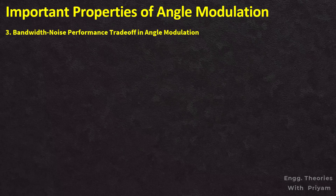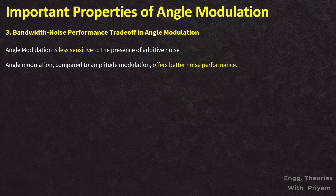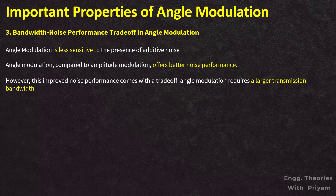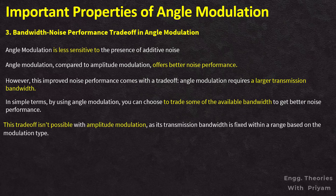The third property is the bandwidth-noise performance tradeoff. Angle modulation is less sensitive to additive noise, but requires a corresponding increase in transmission bandwidth. Compared to amplitude modulation, angle modulation offers better noise performance because modulating the angle of a sinusoidal carrier is less affected by noise than modulating the amplitude. However, this improved noise performance comes with a tradeoff: angle modulation requires a larger transmission bandwidth. This tradeoff is not possible with amplitude modulation, as its bandwidth is fixed within a range based on modulation type.